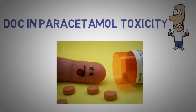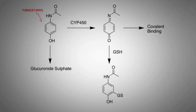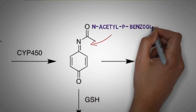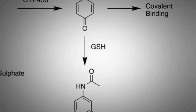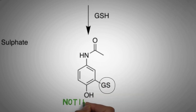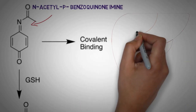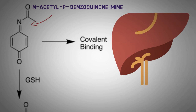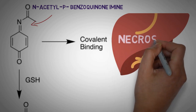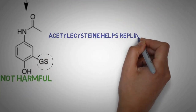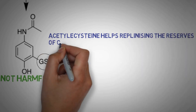Number one: acetylcysteine. Acetylcysteine is the drug of choice in the treatment of paracetamol toxicity. When a patient is overdosing on paracetamol, a minor metabolite is formed called N-acetyl-p-benzoquinone imine (NAPQI). In normal doses, this metabolite would be conjugated to glutathione, which is an antioxidant in our body. However, glutathione is available in limited quantity, so in the case of an overdose, glutathione reserves in the body will not be sufficient to inactivate the toxin NAPQI.